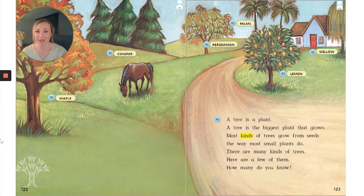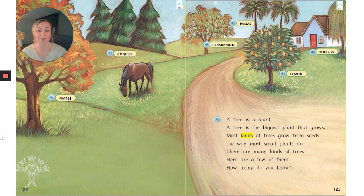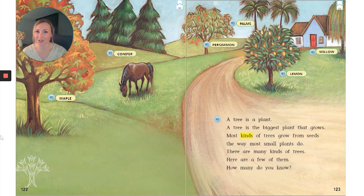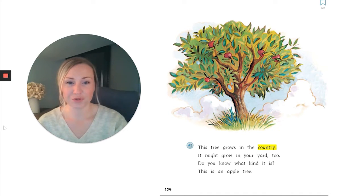We have maples, conifers, persimmon, palms, lemon, and willow. Those are our labels, our nonfiction text feature. This tree grows in the country. It might grow in your yard too. Do you know what kind it is? This is an apple tree.